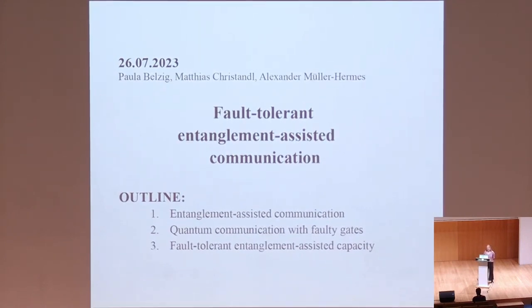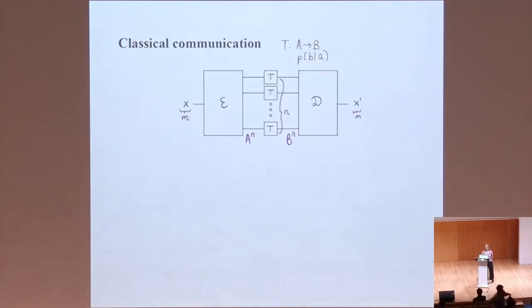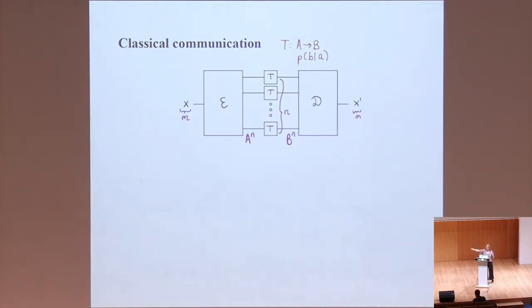First, we're going to talk about the setup for entanglement-assisted communication and fault-tolerant communication, and then I'm going to give a high-level overview over how we prove a coding theorem for the situation. When I talk about communication, what I mean is that there is some sender who lives at E, and some receiver who lives at T, and they are connected by some communication line.